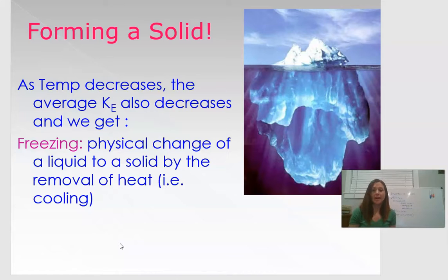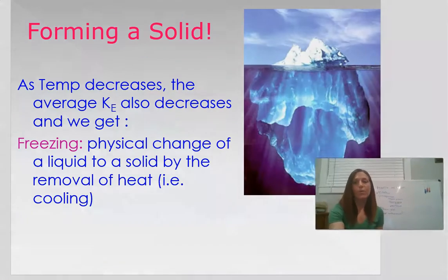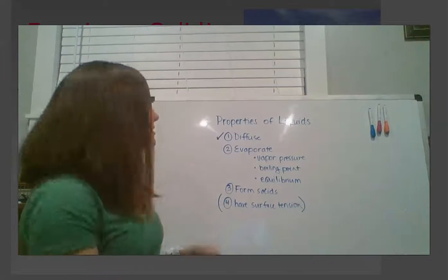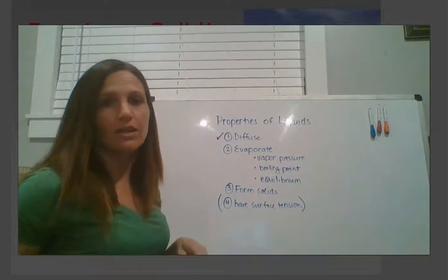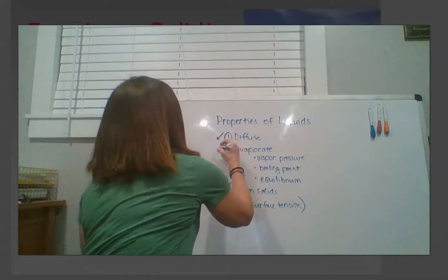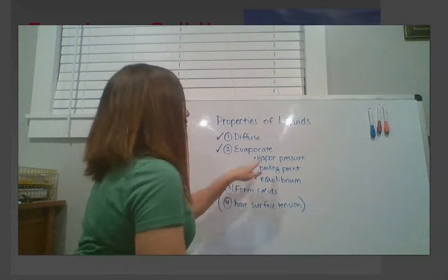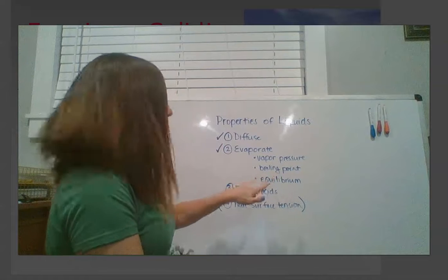So that's the end of our properties of liquid. We have talked about liquid's ability to diffuse, we have talked about its evaporation, we've mentioned the vapor pressure, boiling point, and equilibrium.